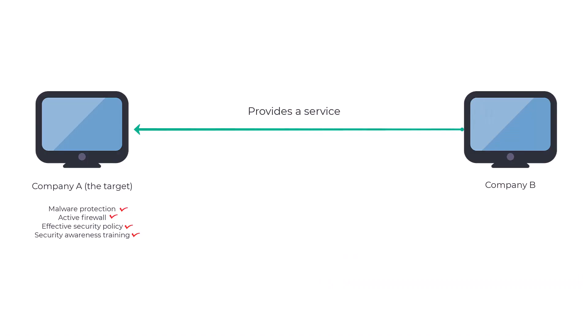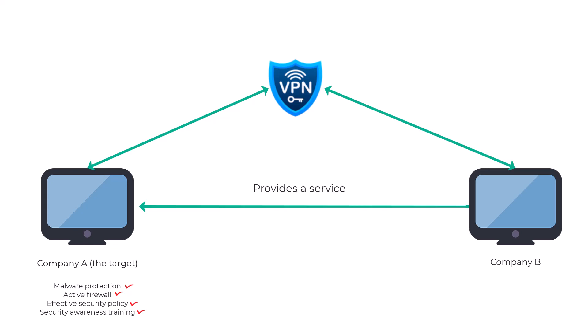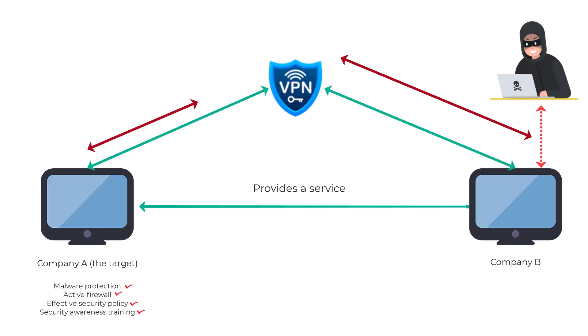So what do the hackers do? Let's assume there is a Company B that provides some sort of service to Company A — maybe customer support, maybe software updates. The most important thing is that Company B has some sort of network access to Company A's network. The hackers will then see if they can attack Company B successfully, and if they can, they take advantage of that network connection to attack Company A. That's basically what a supply chain attack is — going through a third party to attack the actual intended target.